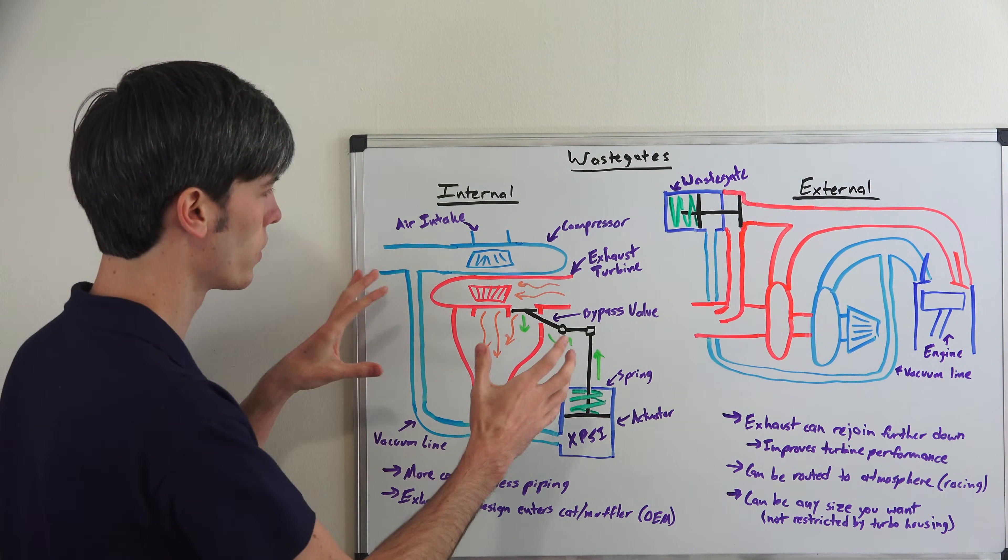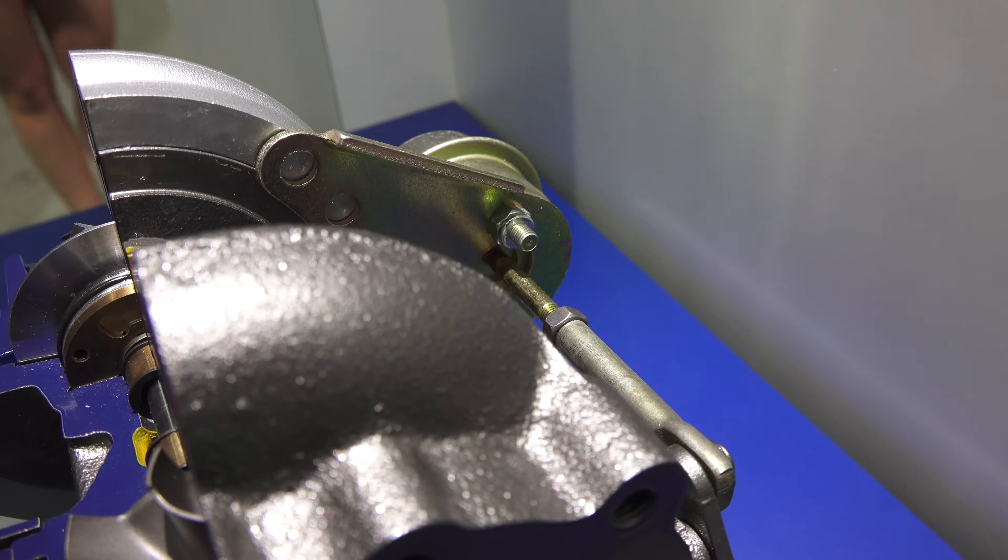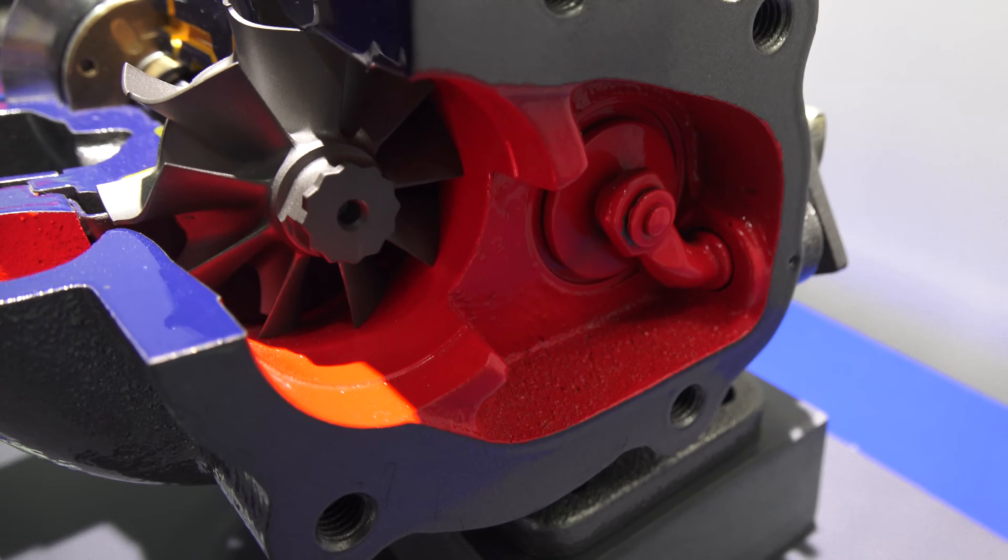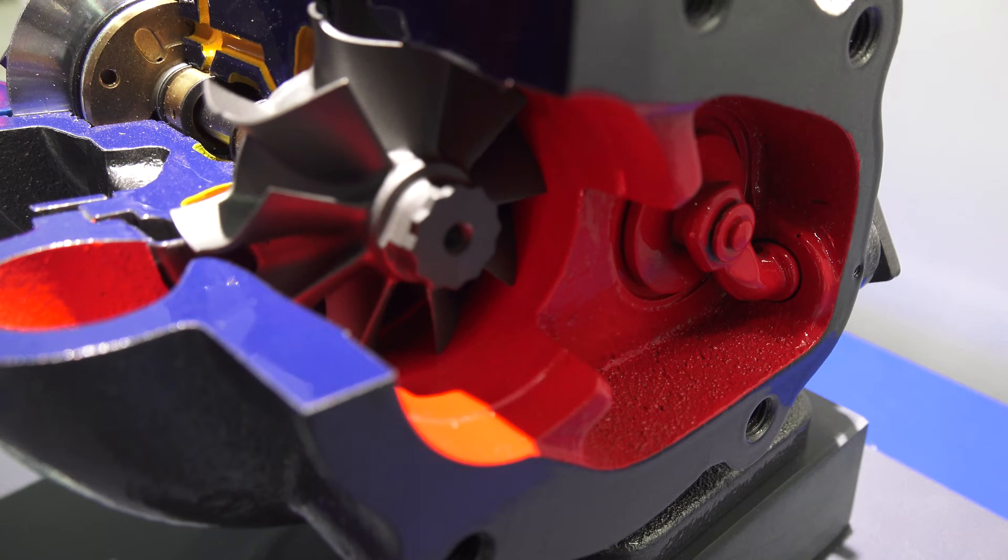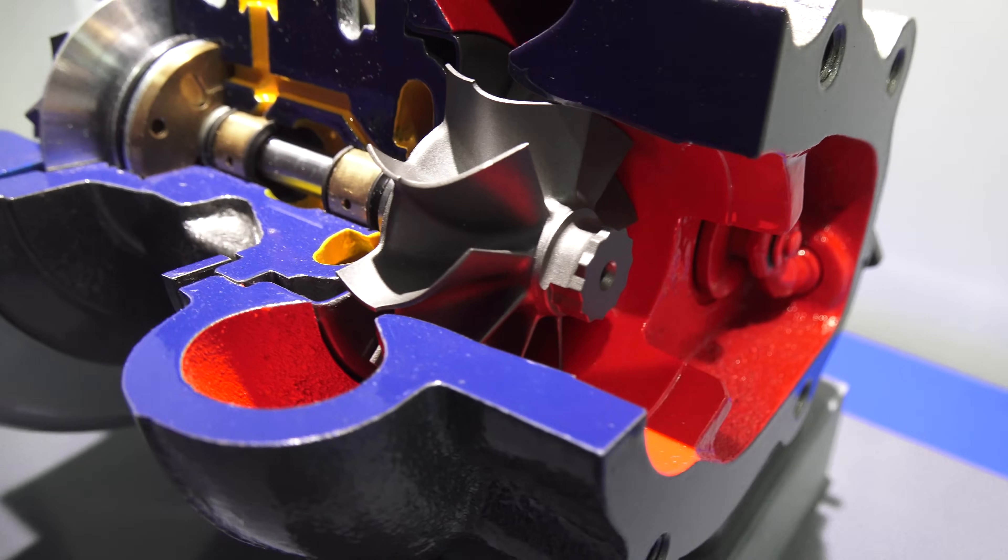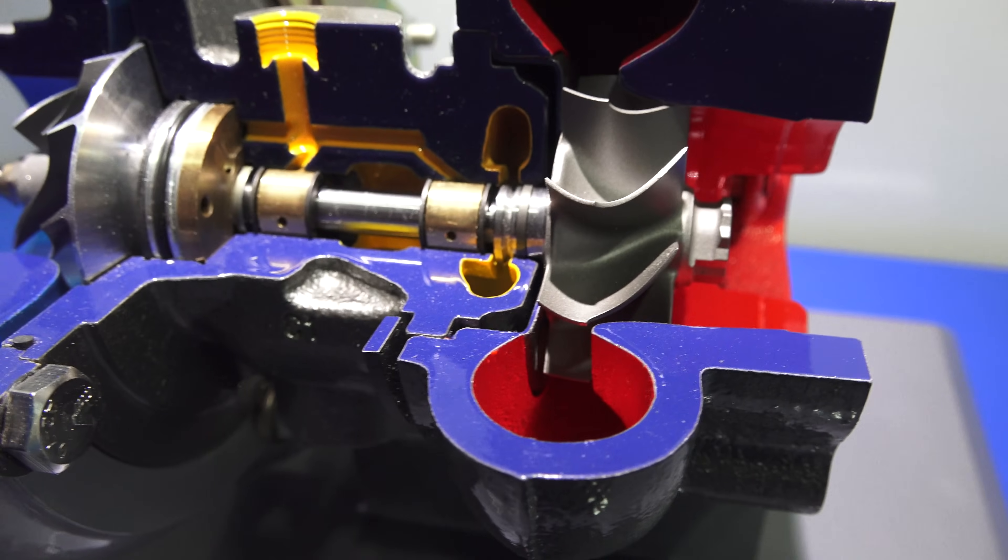Now what are the advantages of doing something like this? Well it's compact, there's less piping and the exhaust by design has to travel through the catalytic converter and through the muffler. And so this is a great solution for OEM vehicles out there which of course have to do that.